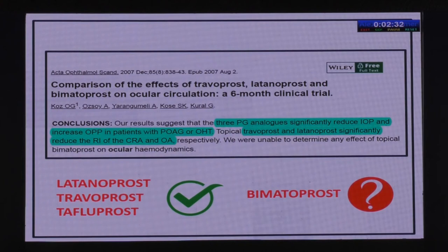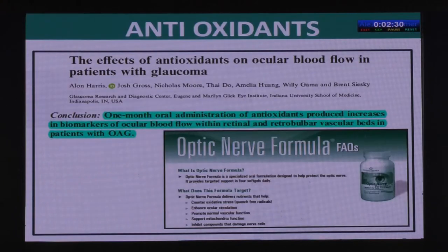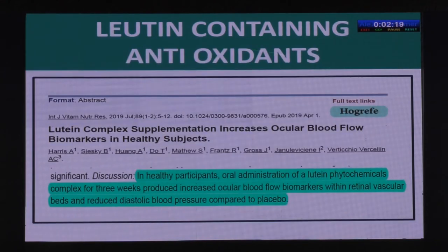A study by Dr. Alan Harris showed that one month of oral administration of antioxidants — particularly lutein-containing antioxidants — will for a few weeks increase ocular blood flow biomarkers within the retinal vascular beds and reduce diastolic blood pressure compared to placebo. So putting your glaucoma patients on lutein-containing antioxidants is probably a good idea.